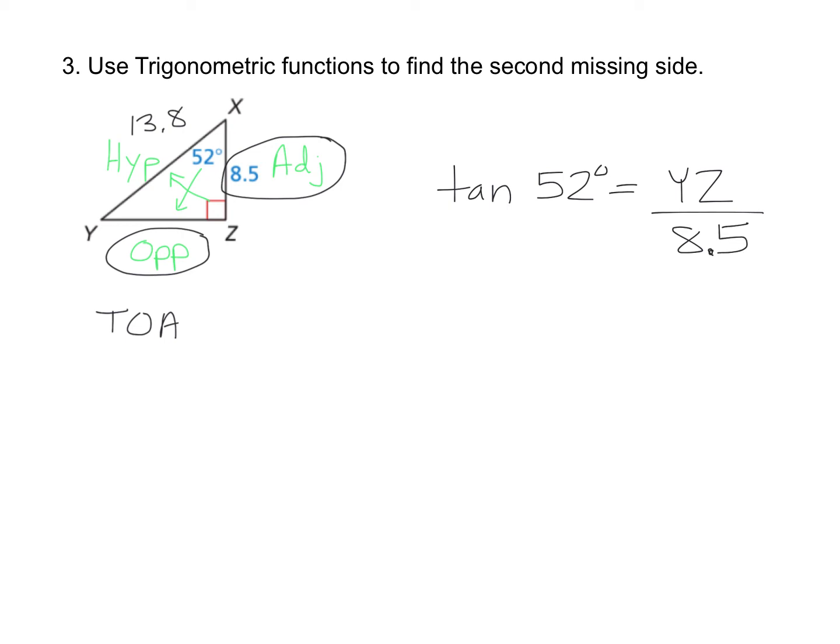Now we can solve that with the cross product. We have 8.5 times the tangent of 52 degrees is equal to 1 times YZ, which is just YZ.